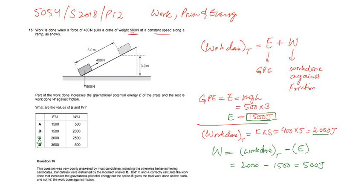is converted into gravitational potential energy and the rest is work done W against the friction. So W is the work done against the friction and E is the gravitational potential energy which is gained due to the work done on the box to move a distance of 5 meters and gain a height of 3 meters. What are the values of E and W? E is gravitational potential energy and W is the work done against the friction.